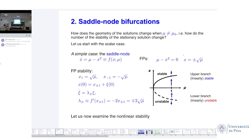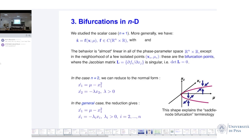We'll study a scalar case and a more general case. Vectors are denoted by arrows in France and Italy, but in the Anglo-Saxon literature they are denoted by bold face. So x and f are vectors in R-n and mu is in R. The behavior is almost linear in all of the phase parameter space, except in the neighborhood of a few isolated points — which I denote by C for critical — these are the bifurcation points where the Jacobian matrix is singular. The counterpart when n is not equal to 1 of lambda being equal to zero is having at least one eigenvalue of the Jacobian matrix equal to zero.